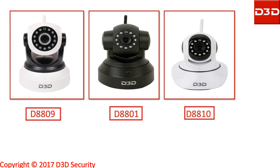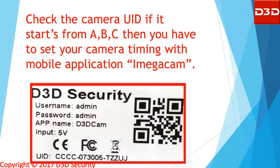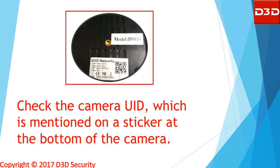This video will show how to set time in D3D Wi-Fi IP camera models D8809, D8801, and D8810. Check the camera's UID — if it is started with A, B, or C, then set the time zone from the mobile application iMegaCam directly. Check the camera UID which is mentioned on a sticker at the bottom of the camera.